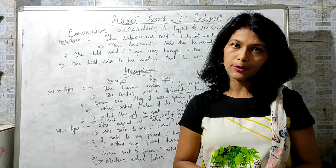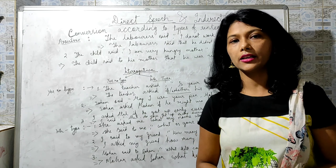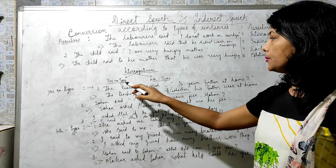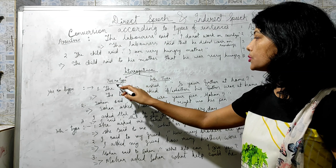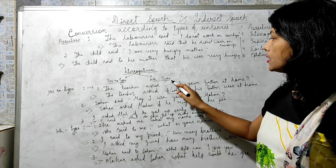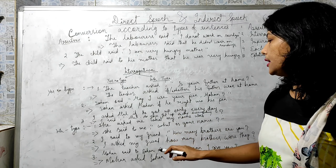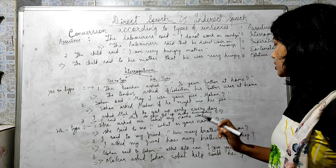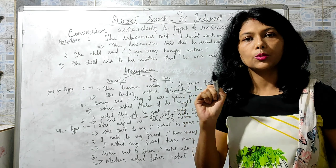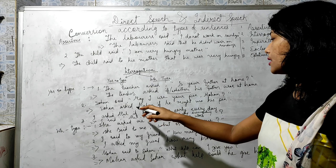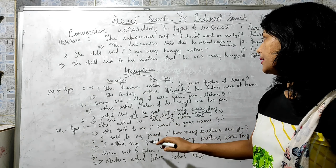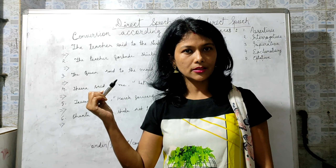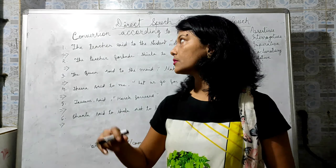Summary: for assertive sentences, all rules are same as part one. For interrogative — yes/no type uses 'if' or 'whether'; WH type retains the WH word. In direct speech, question mark is used; in indirect speech, no question mark. 'That' is not used; instead use 'if,' 'whether,' or the WH word after 'ask.'